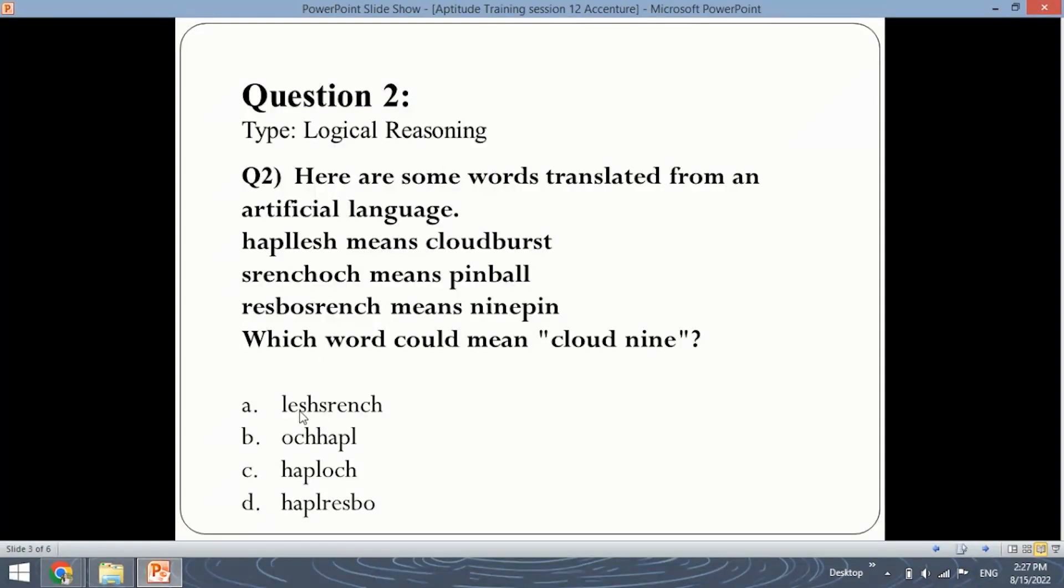See, because lesrench cannot be because less will mean burst, and srench will mean pin. Auchapl will not be because auch will mean ball, and hapl will be cloud, but we need to find out cloud nine. So, your cloud will be hapl, and nine will be respo. So, the answer will be option D, haplrespo.